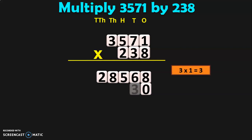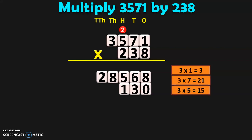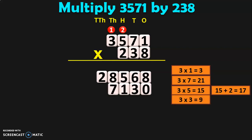Next, we will have to multiply 3571 by 30, because 3 is in the 10s place. So, you will have to add a 0 in the 1s place and begin the multiplication as usual. 3 into 1 is 3. 3 sevens are 21 — 1, carry over 2. 3 fives are 15, plus 2 is 17 — 7, carry over 1. 3 threes are 9, plus 1 is 10. So, 0 in the ten-thousands place and 1 will move to the lakhs place value.